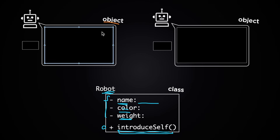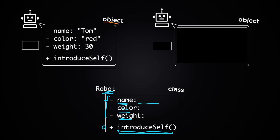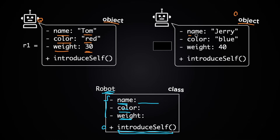From this class we want to create two objects. The first object will have the name Tom, the color red as a string, and the weight 30 to show 30 pounds as an integer. We're going to put this object in a variable called r1. The second object will have the name Jerry, the color blue, and a weight of 40, stored in a variable called r2.